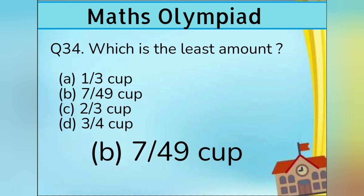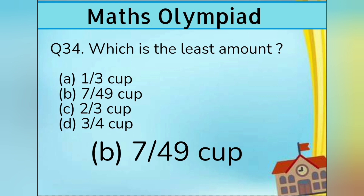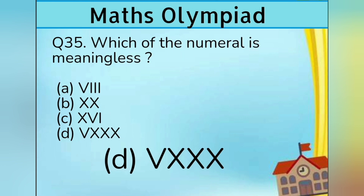Question 35. Which of the following Roman numerals is meaningless? Option A VIII, Option B XXX, Option C XVI, Option D VXX. Answer is Option D VXX.